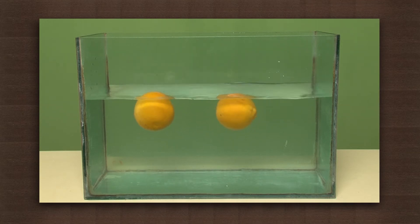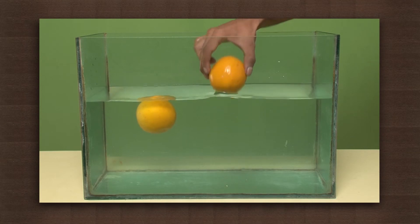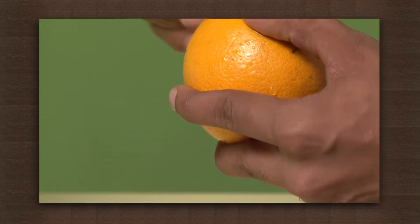Orange floats because its density is less than that of water. Now peel one orange and put it in water.